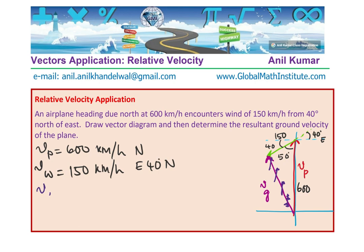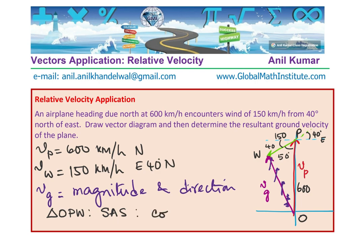Now, we need to solve this triangle. Once you solve this triangle, you get the resultant ground velocity. Now, we want resultant ground velocity. That means we want the magnitude and direction. Not just the magnitude. Now, how can you get that? Well, you can see that this forms a triangle whose sides and included angle is given to us. So, let me label this. Let us say OPW. So, in triangle OPW, what is given to us? We are given side, angle, side.